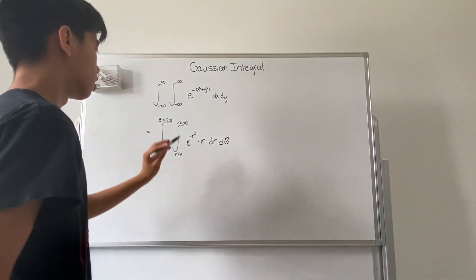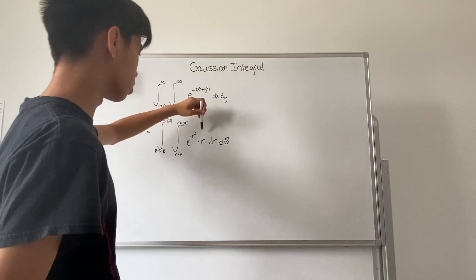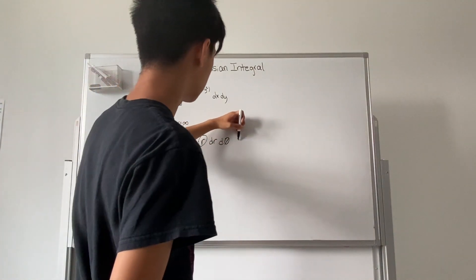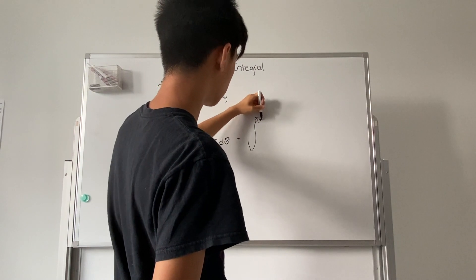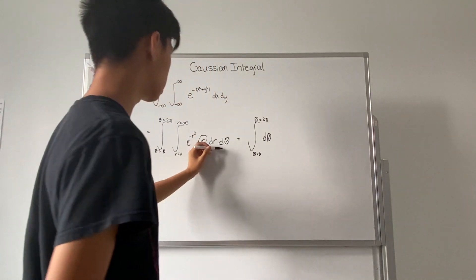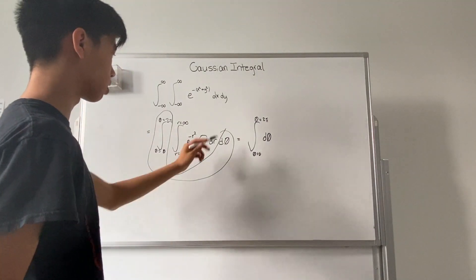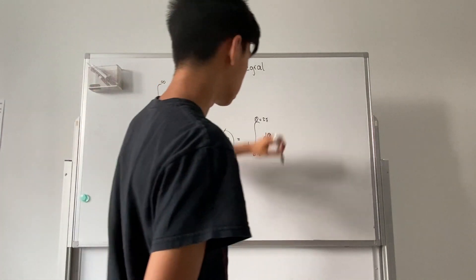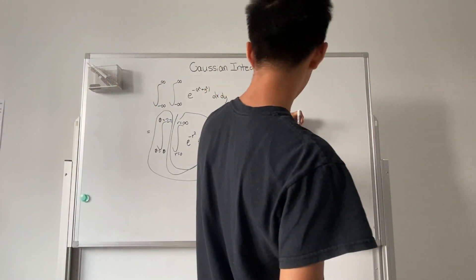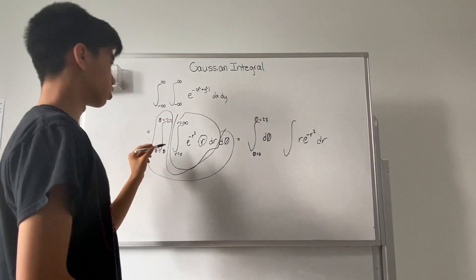Because remember, if you convert something from rectangular coordinates to polar coordinates, you have to multiply by r. So now we can separate this: we have the integral from theta equals zero to two pi of d theta, multiplied by the integral from r equals zero to infinity of r e to the negative r squared power dr.